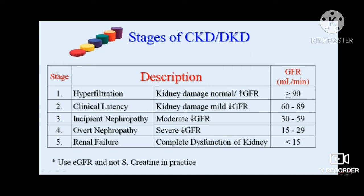From hyperfiltration up to incipient nephropathy, there is microalbuminuria, and from overt nephropathy to renal failure there is macroalbuminuria, that is above 300 mg per day. BP is normal up to the incipient stage and starts increasing from the overt stage. Time duration is 5 to 15 years to reach incipient, and 15 to 20 years for overt nephropathy or end-stage renal disease.